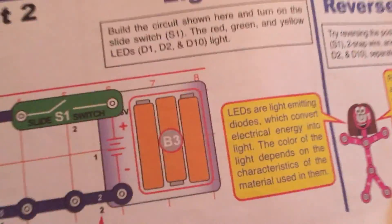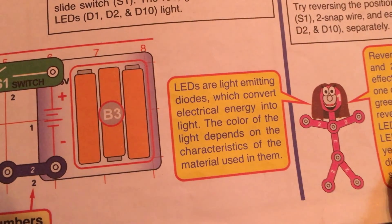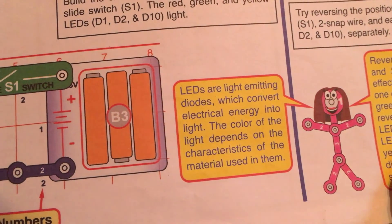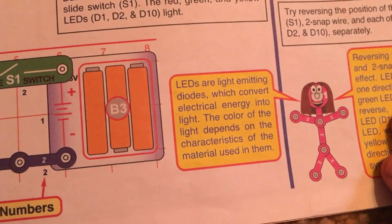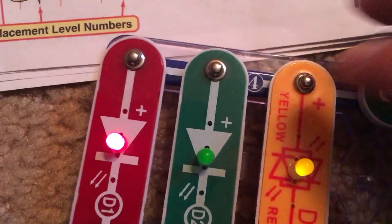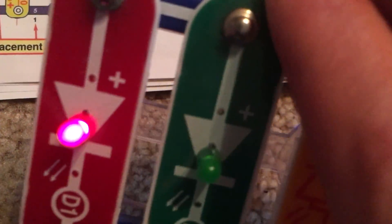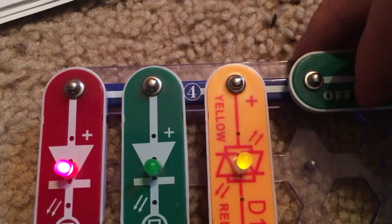Ms. Snappy says that LEDs, which convert electrical energy into light, have color, which depends on the characteristics of the material that is used in them. For some reason, the green LED isn't too bright, but what can we do?